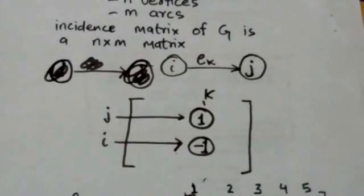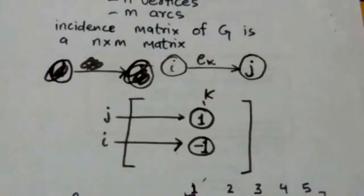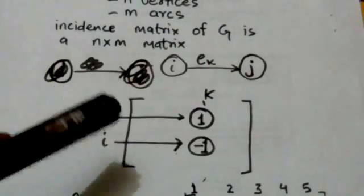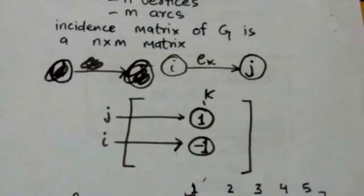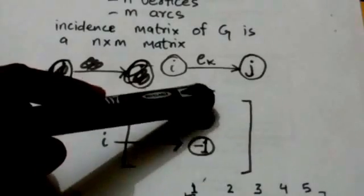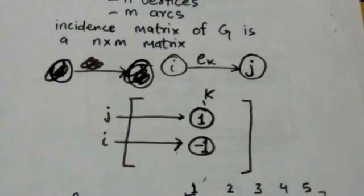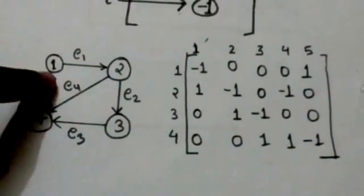If there is a digraph G in which there is an arc Ek from vertex i to vertex j, then in the incidence matrix of digraph G, the entry at the i-th row and k-th column will be minus 1, and the entry at the j-th row and k-th column will be 1, and all other entries in column K will be 0.